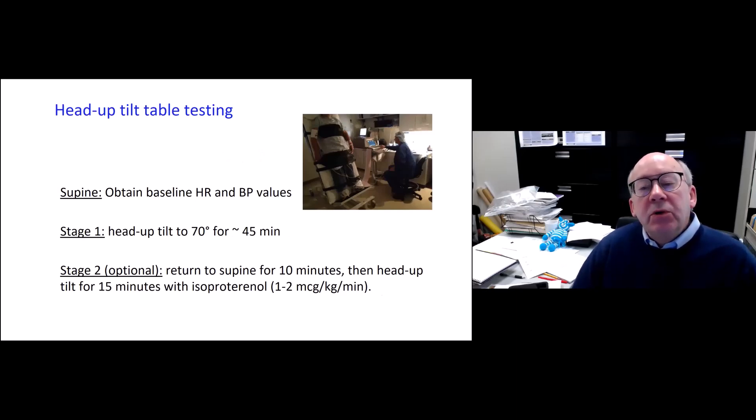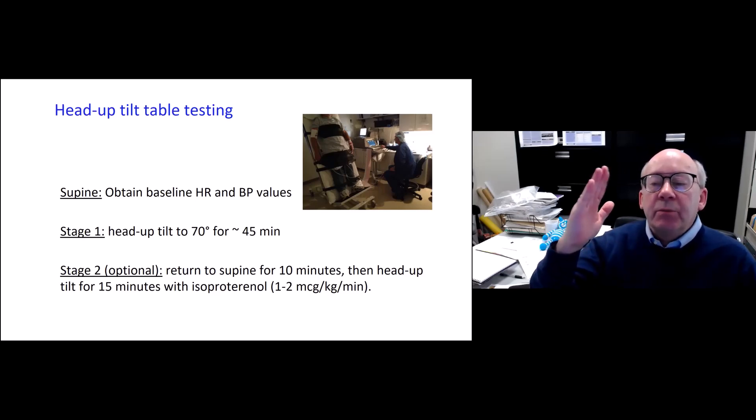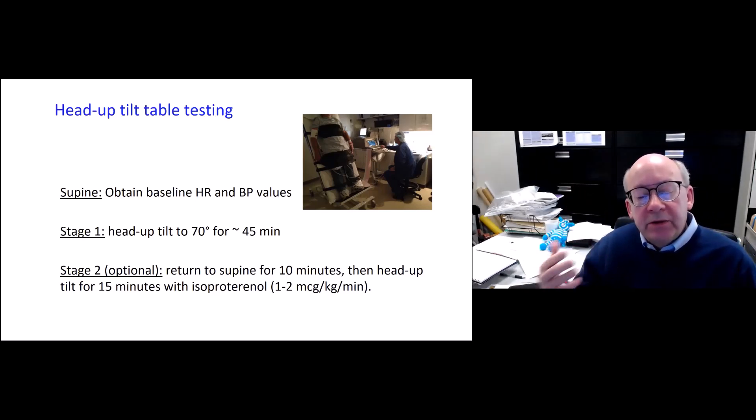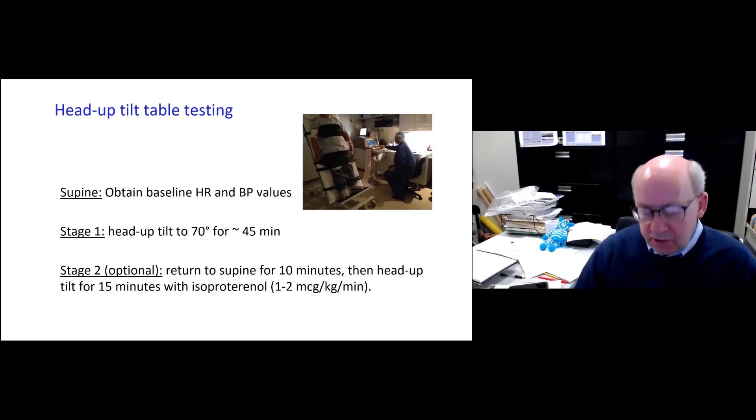The head up tilt table test, which is shown in this slide, it really involves less use of the leg muscles. So it can provoke a little bit more orthostatic intolerance than the standing tests. So here the patient is brought on a motorized table up to a 70 degree angle for about 45 minutes. Some institutions will do a second stage. If the patient has tolerated the first 45 minutes upright, the table is brought flat again and then returned to a 70 degree position while there is an infusion of isoproterenol, which is another substance like epinephrine and norepinephrine that can mimic some of the stresses of day-to-day life. It's intended to drive up heart rate by about 20 minutes and it can induce fainting.